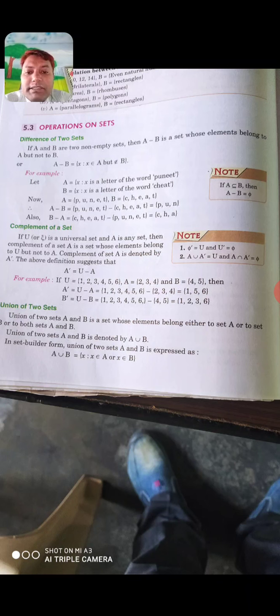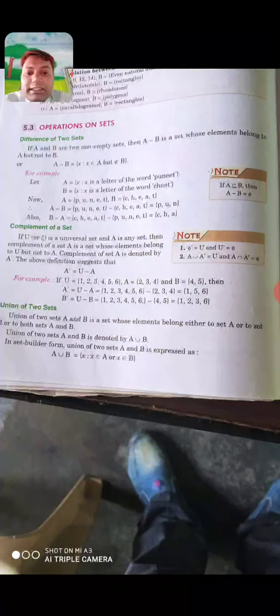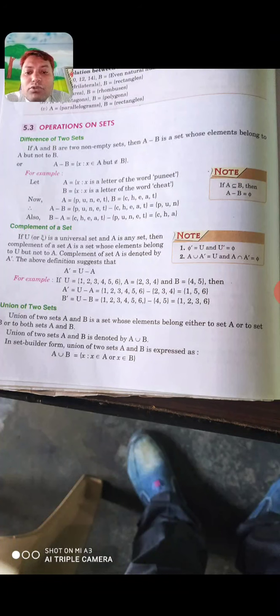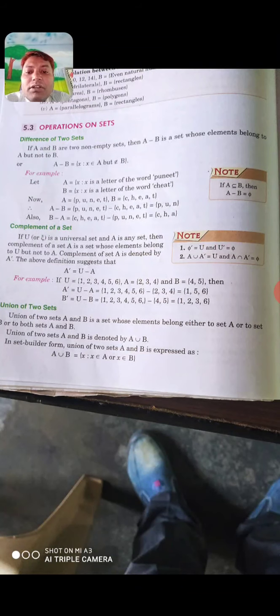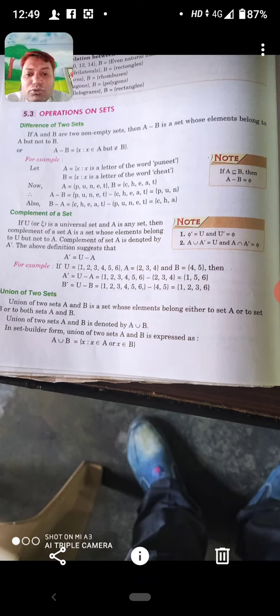Complement of a set: if U is a universal set and A is any set, then complement of a set is a set whose element belong to U but not A. Complement of a set A is denoted A complement. So A complement is equal to U minus A where U is a universal set and set A is a set which contains some elements.